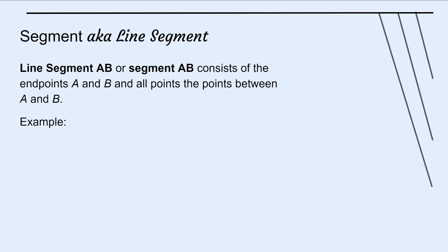Segment, a.k.a. line segment. A line segment is just a cut-up piece of a line. Line segment AB, or segment AB, consists of the endpoints A and B, and all other points that may be in between those. Here we have an example of a segment.